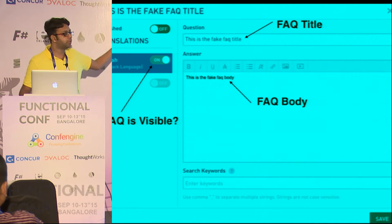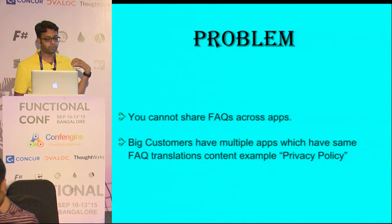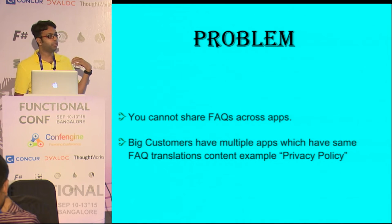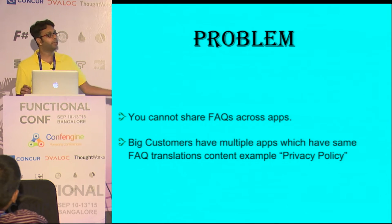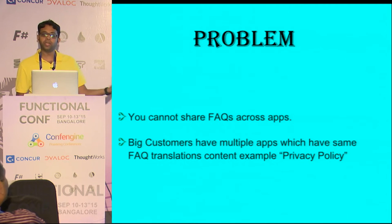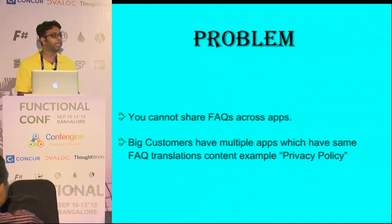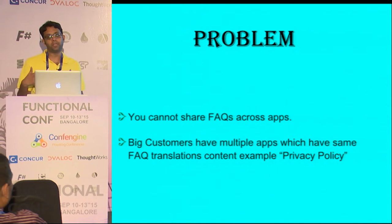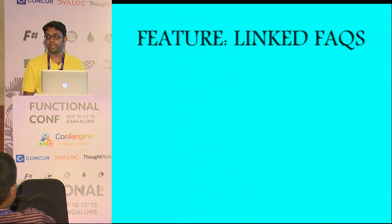There is a problem in our system which we were trying to solve: currently we could not have one FAQ common across several apps. If you have a privacy policy, you need to create that privacy policy again for a second or third app. We needed to solve this, but there was a constraint — customers wanted only the content to be shared, not the whole meta. They didn't want to share the meta of whether this FAQ is available or not. So we introduced a feature called linked FAQ.